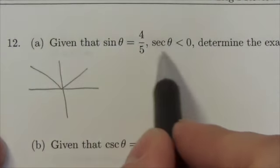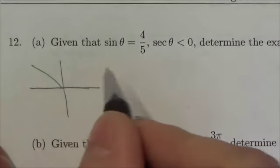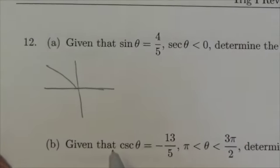But we're given a little bit more information. We're told that the secant is negative. Now, the reason why that's significant here is because secant is not negative in quadrant one. So this must be a quadrant two angle.